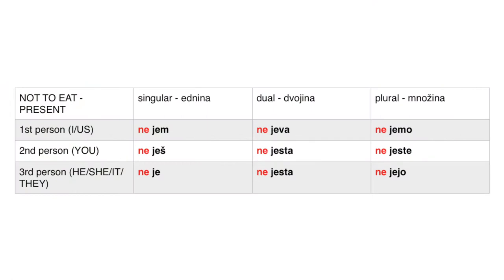When it comes to the verb 'not to eat' in present tense, we have a handy formula — we just put the word 'ne' in front of all the forms we've just covered. 'Ne' in Slovenian means 'no', so we just negate the form. First person singular of 'not to eat' becomes 'nejem', second person singular becomes 'neješ', third person singular becomes 'neje', and the dual and plural forms follow the same pattern with 'ne' prefixed.